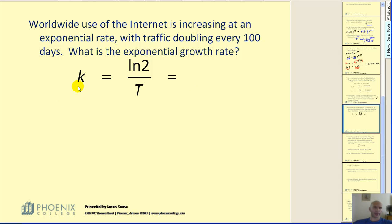So if we want to find k, we can divide natural log two by the doubling time, which in this case is 100 days.